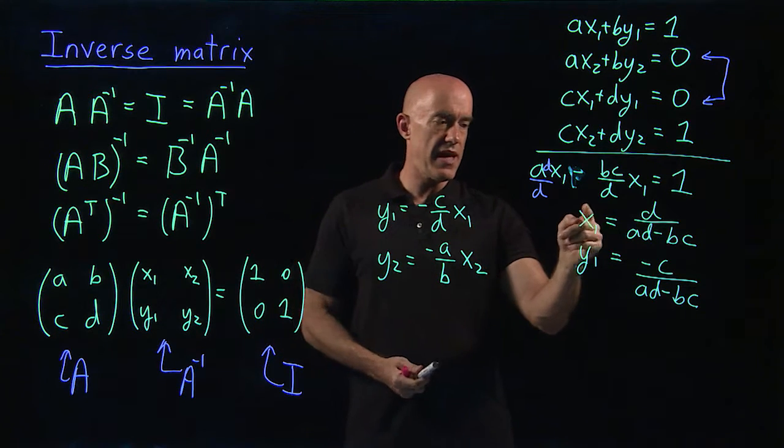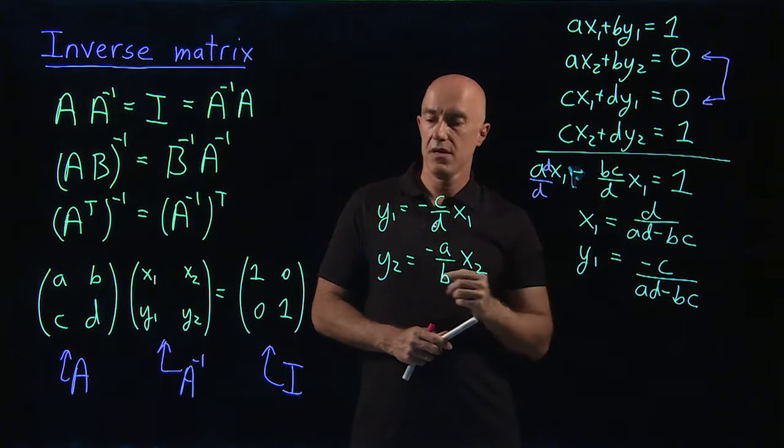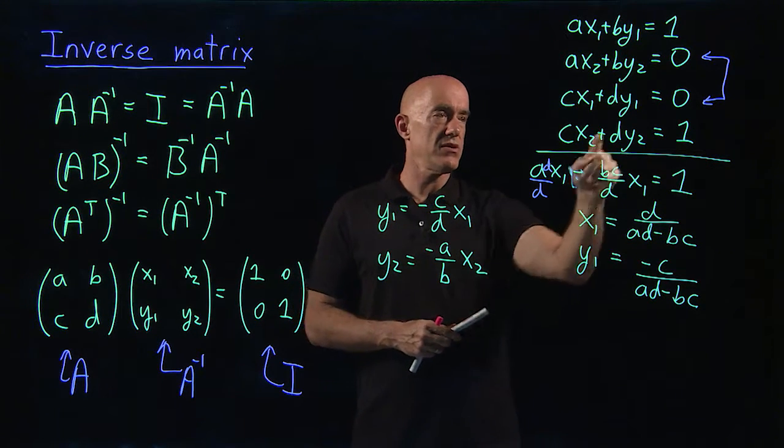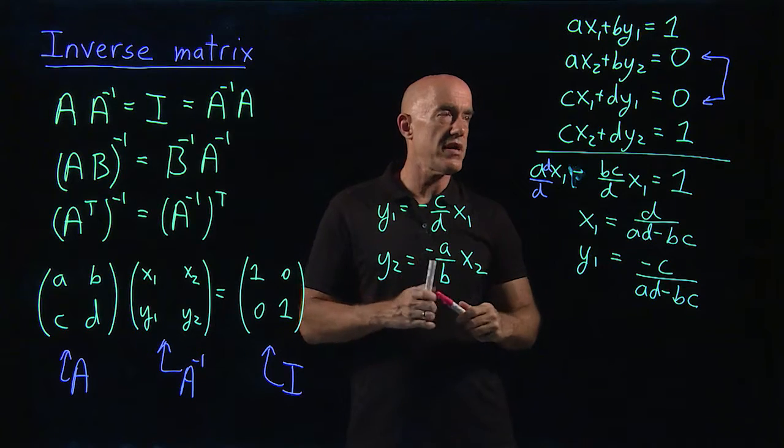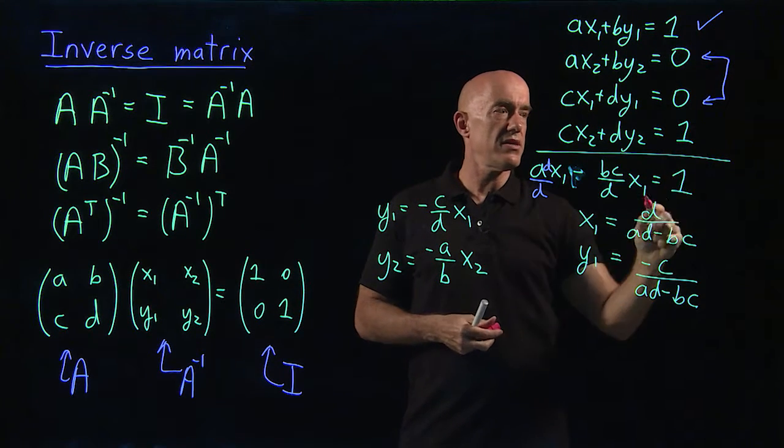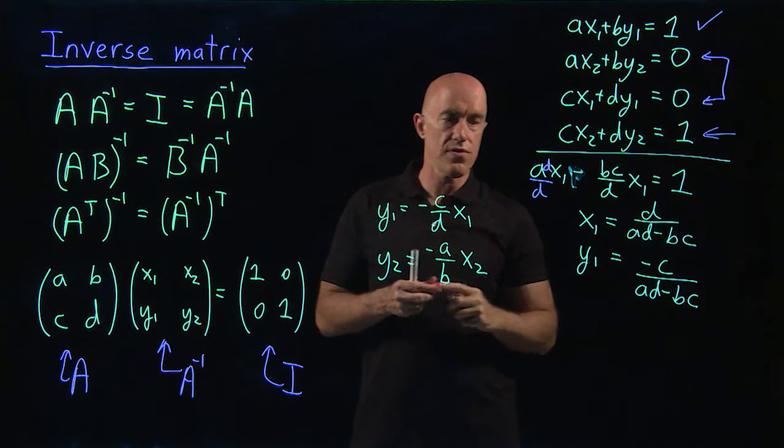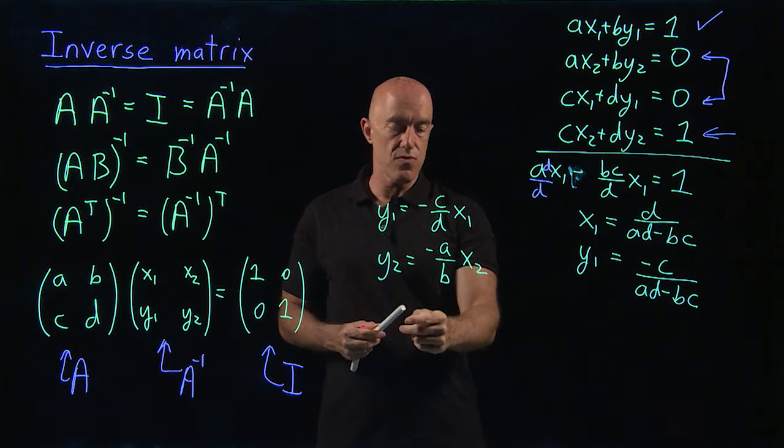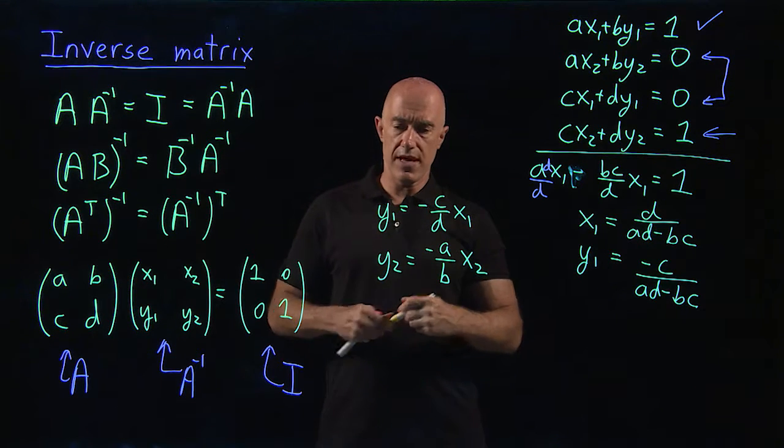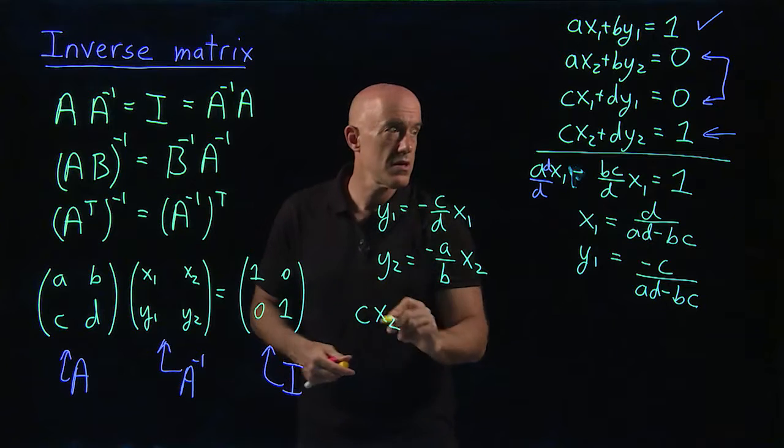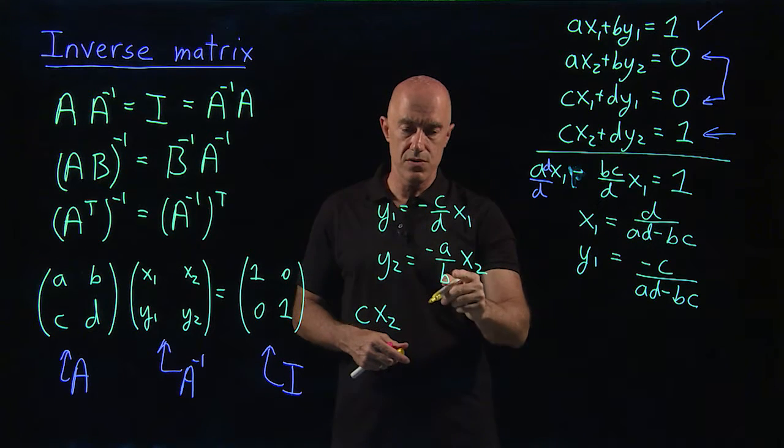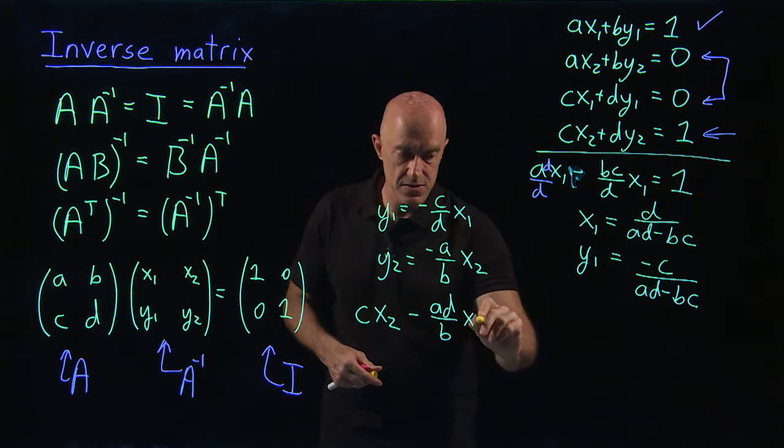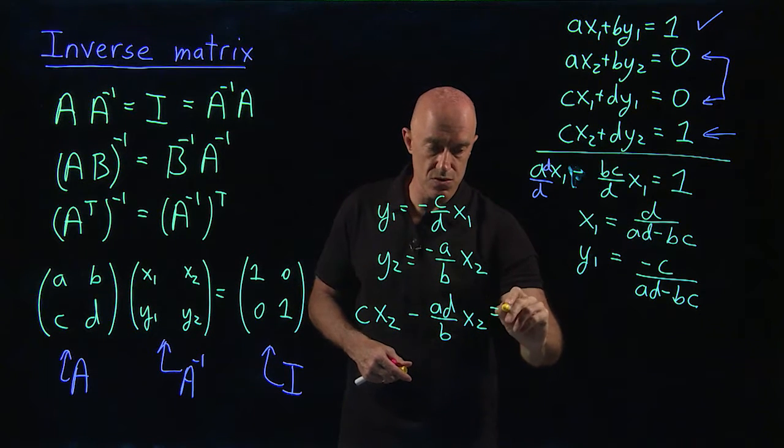Now we need to find x2 and y2. So we have y2 here in terms of x2. So now we need to use the fourth equation. We just used the first equation. So now we need the fourth equation. So we substitute in y2. Let me write it down here. So we have cx2 plus dy2. So that becomes minus ad over bx2 equal to 1.